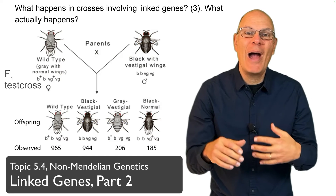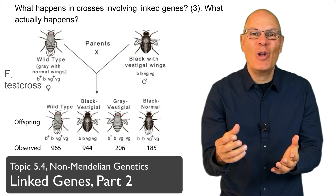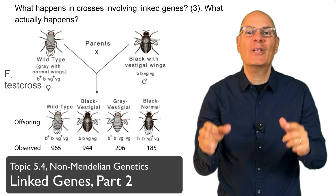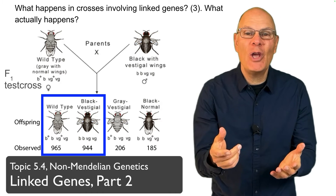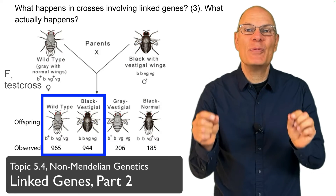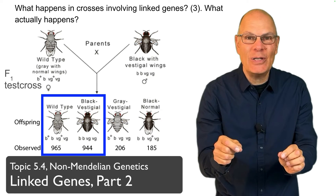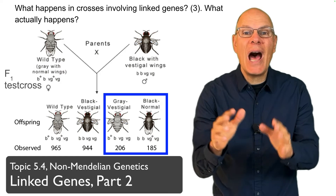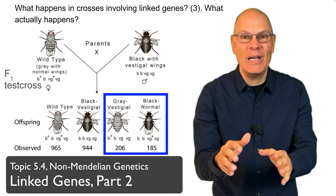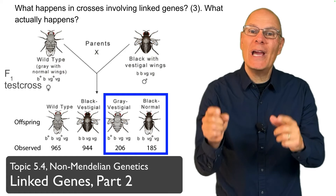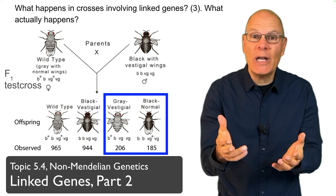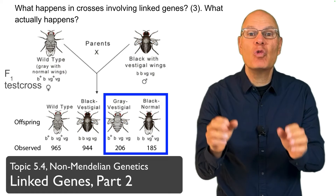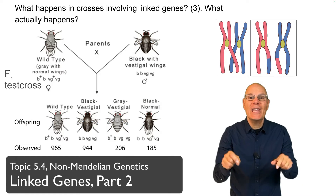In the last video, we saw how in test crosses in Drosophila involving linked alleles, most of the offspring have parental phenotypes, but a significant number have recombinant phenotypes. We identified that the cause of those recombinant offspring was crossing over during meiosis.